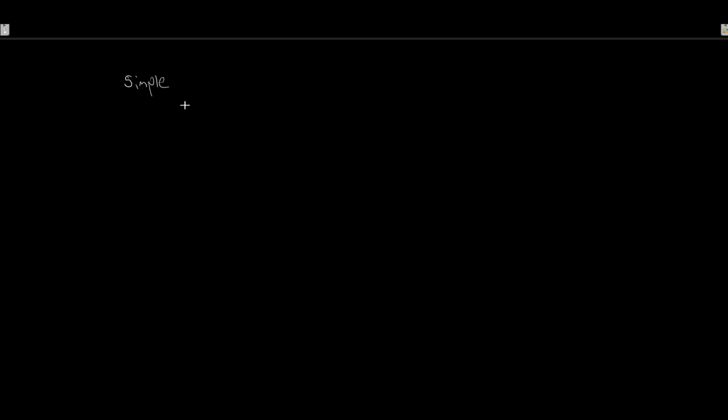Let's start with simple random sampling. Suppose we have a company with 500 people — that's our population, big N. Out of these 500 people, we want to collect a sample of 50 — that's our sample, little n. We want to collect this sample in a random fashion.